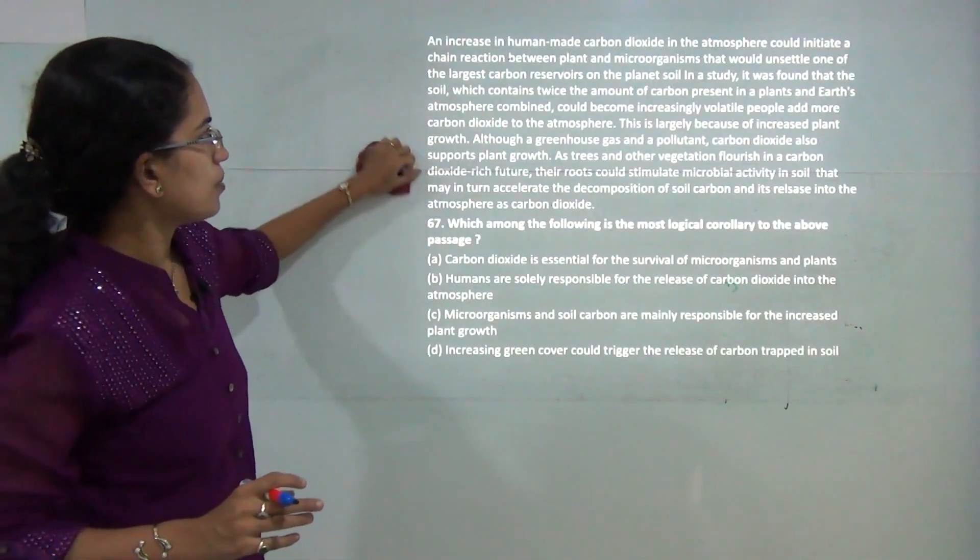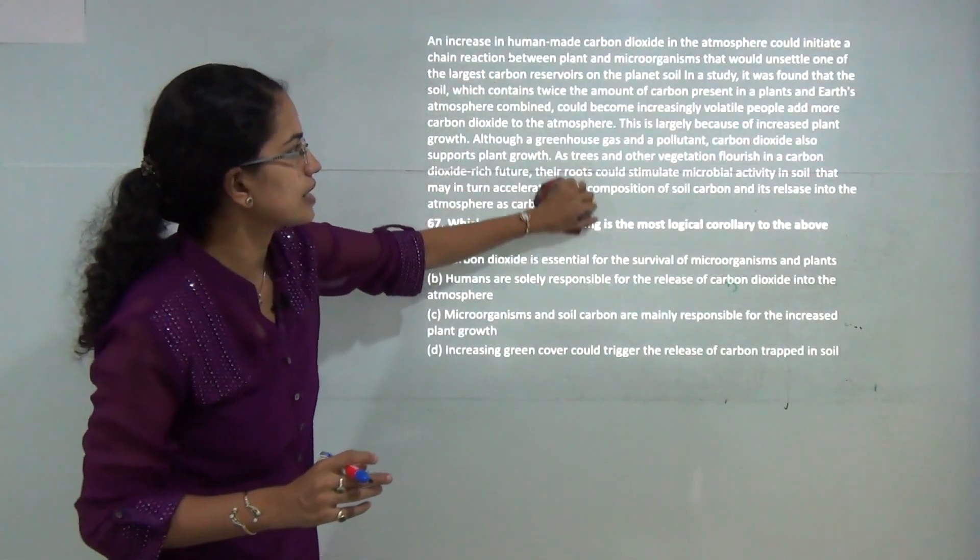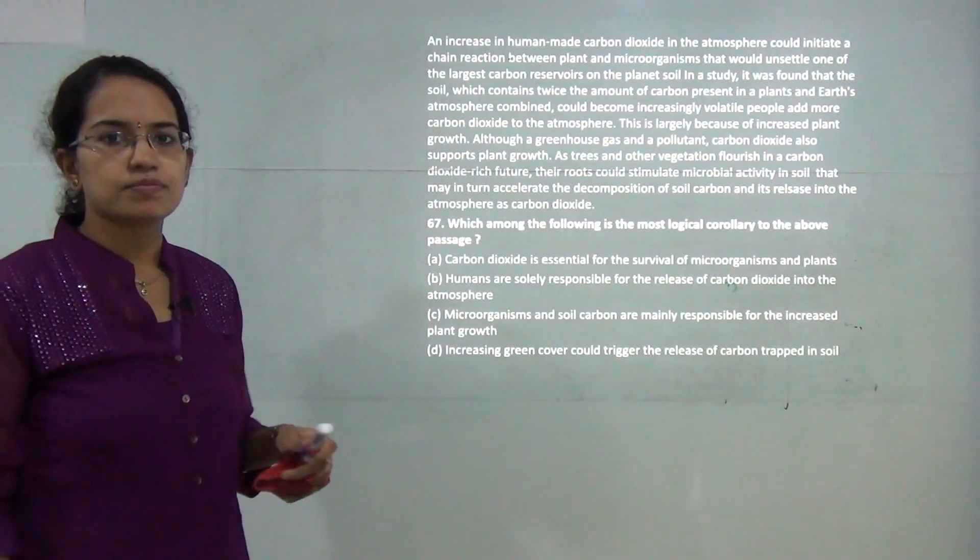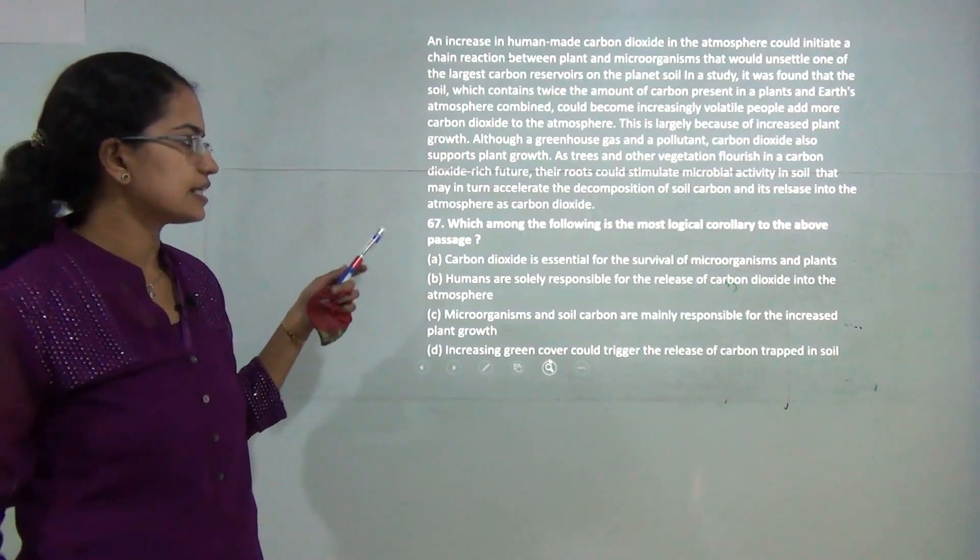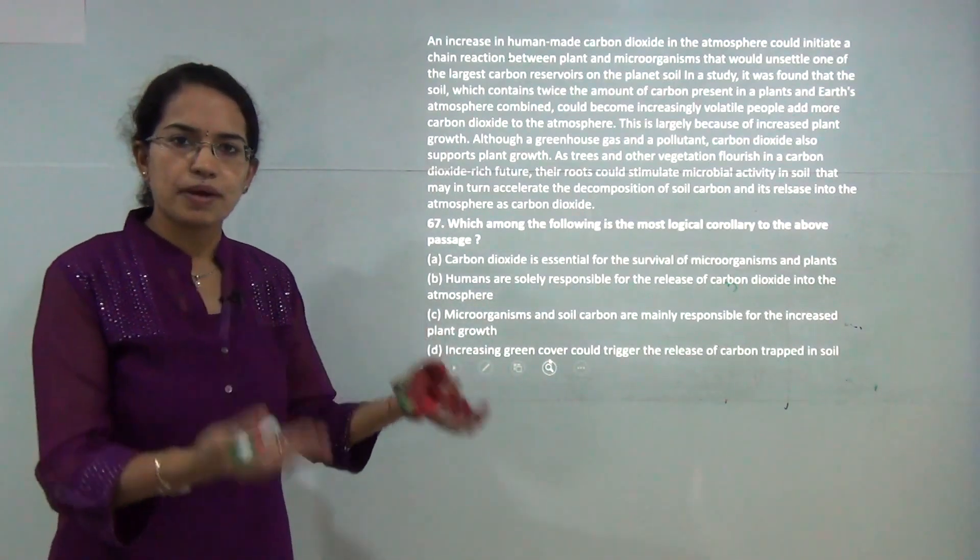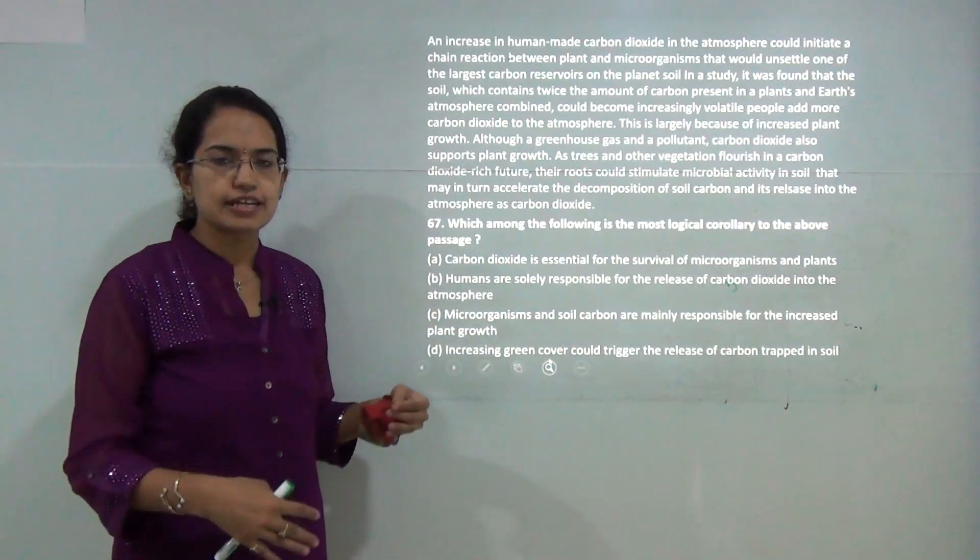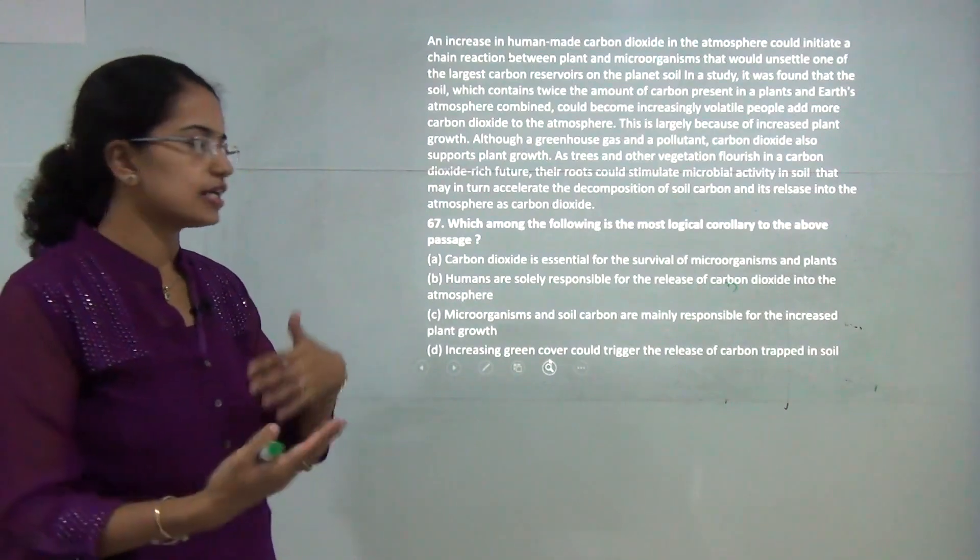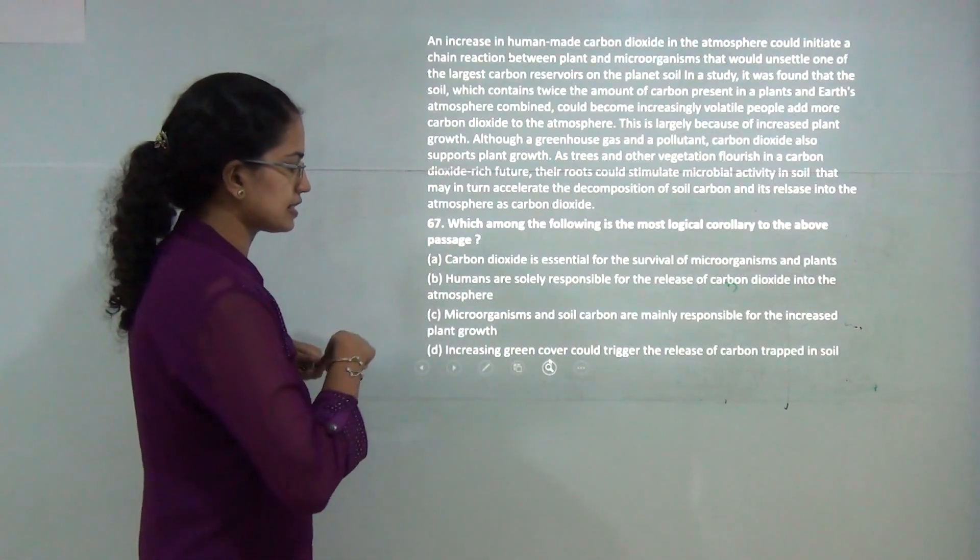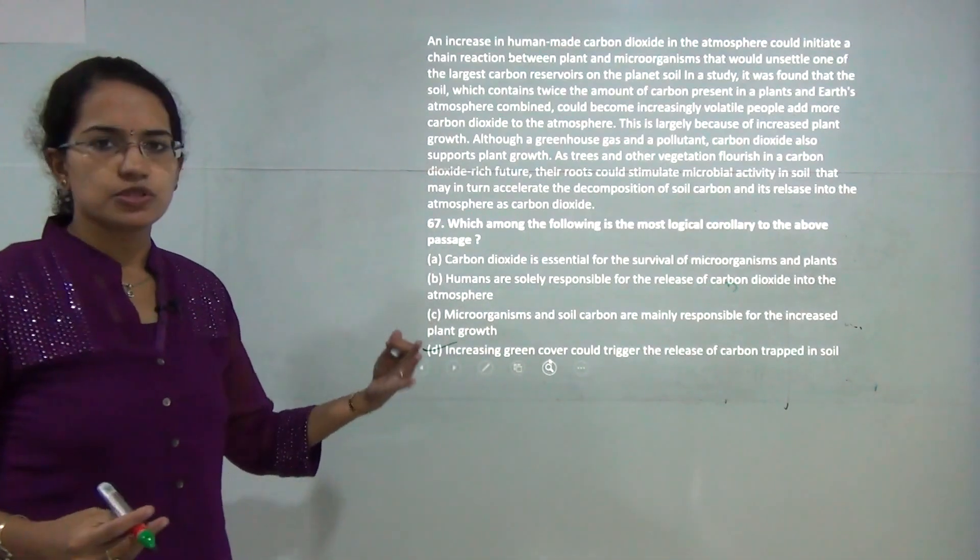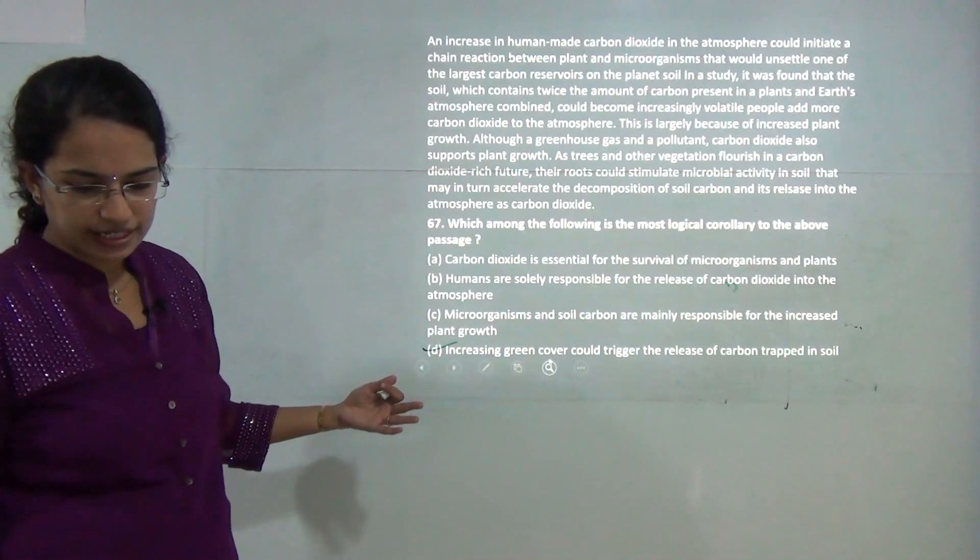This passage is about human-made carbon dioxide in the atmosphere. More CO2 means more trees, which means more bacteria in the soil, which generates more CO2, leading to more trees. Increasing green cover would definitely trigger carbon trapped in the soil. D is the correct answer.